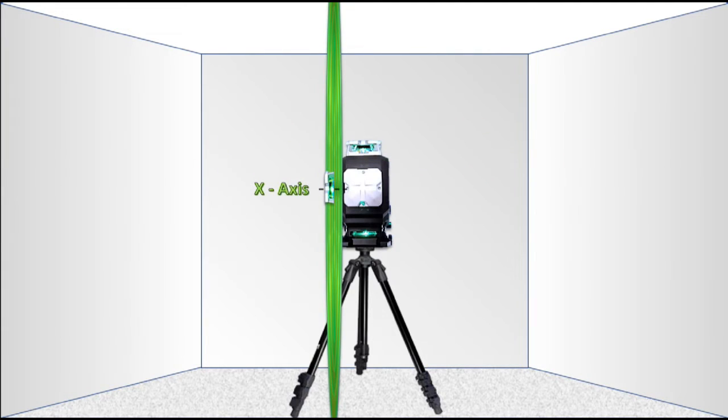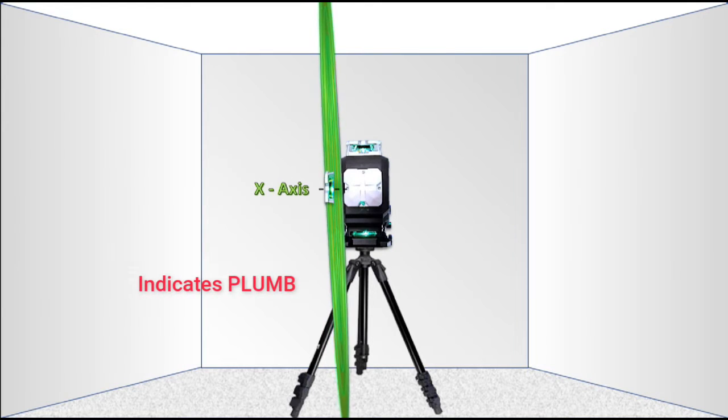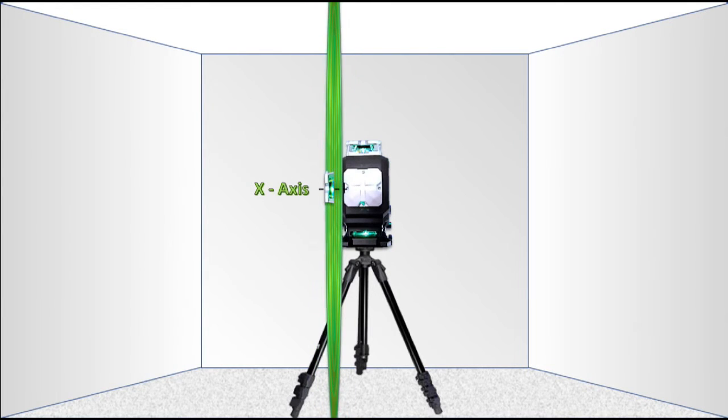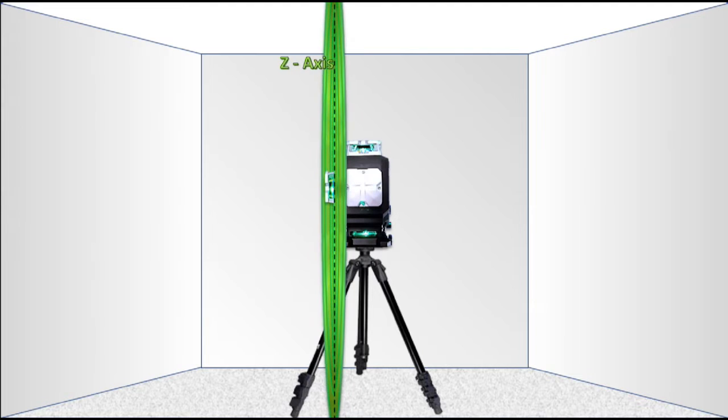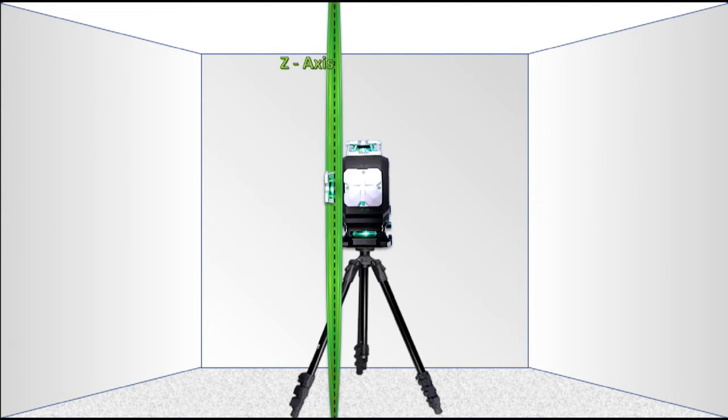The vertical lines projected towards the ceiling and floor are used to indicate plumb, and in self-leveling mode, pivot on the x-axis. In self-leveling mode, the vertical laser plane does not pivot around the z-axis, but this should still be measured when doing a calibration check.